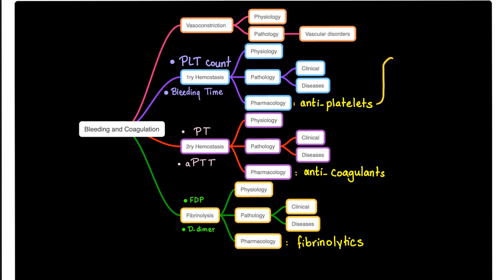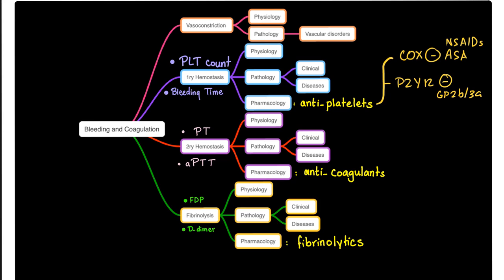The first group is the cyclooxygenase inhibitors — aspirin and other non-steroidal anti-inflammatory drugs. The second group is called P2Y12 inhibitors. They inhibit P2Y12, which inhibits ADP-dependent expression of GP2B3A. Without GP2B3A, there is no platelet aggregation. Examples of P2Y12 inhibitors include clopidogrel and prasugrel — drugs ending in '-grel' are probably P2Y12 inhibitors.